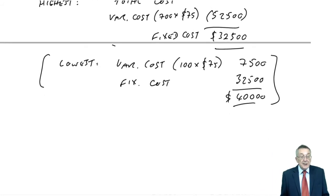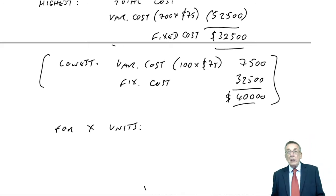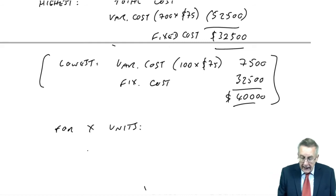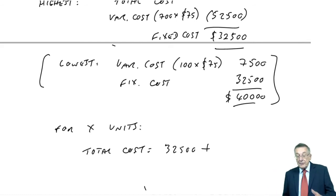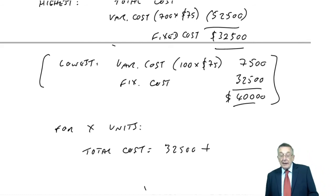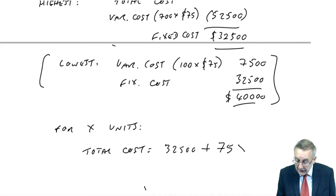But there we are. And we could now use that for forecasting because we can say that however many units we produce, so for X units, if I'm trying to forecast for next month, next month I think we'll produce 800 units or something. Well, can we not say that the total cost, there's always going to be the fixed cost of $32,500, but in addition a variable cost of $75 for every unit and therefore with X units a total of 75X.